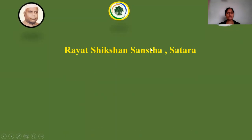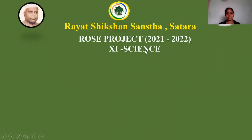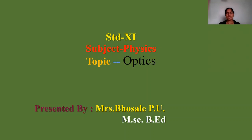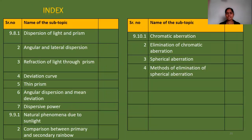Hello friends, welcome to Reyesh Kishnan Samusthans Rose project for 11th Science. This project is conducted by Yeshwant Rao Chauhan Institute of Science, Satara. I am Pallavi Hosle, a physics teacher. We will discuss the topic of optics, covering points 9.1 to 9.10.1, that is dispersion of light and prism, dispersive power, chromatic aberrations, and spherical aberrations.